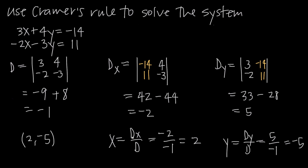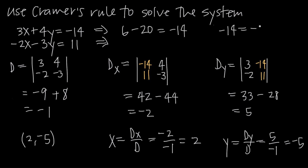To double-check, we plug these values back into the original equations. For the first equation: 3 times 2 is 6, and 4 times negative 5 is negative 20, so 6 minus 20 equals negative 14. That makes sense — 6 minus 20 is negative 14, and we get negative 14 equals negative 14. So that checks out.